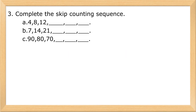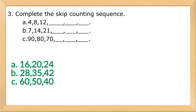3. Complete the skip counting sequence. A: 4, 8, 12. B: 7, 14, 21. C: 90, 80, 70.